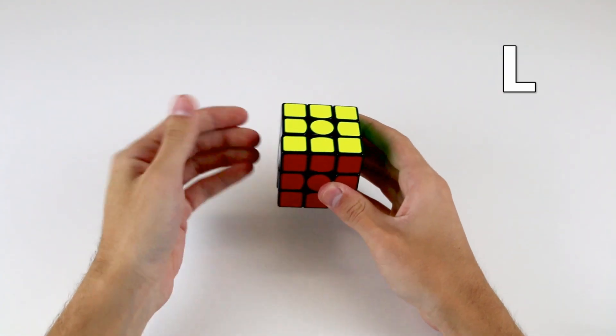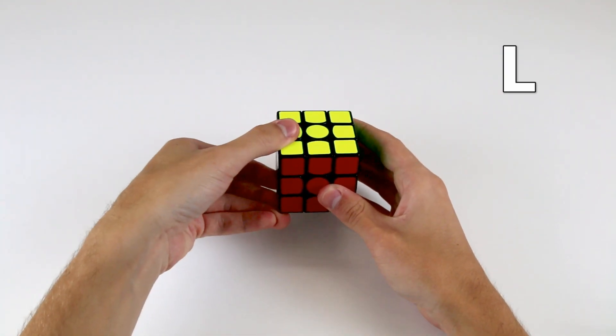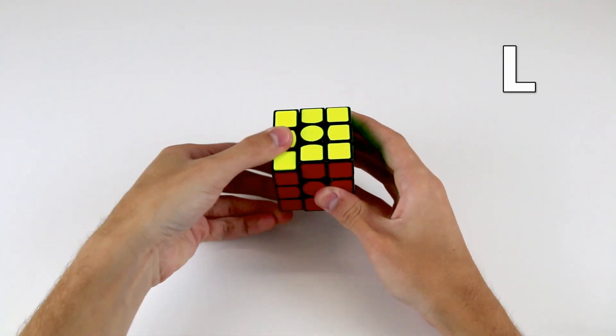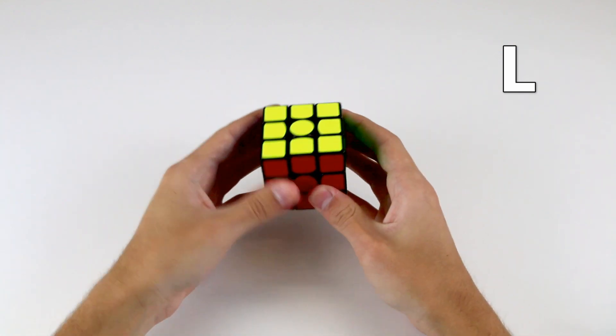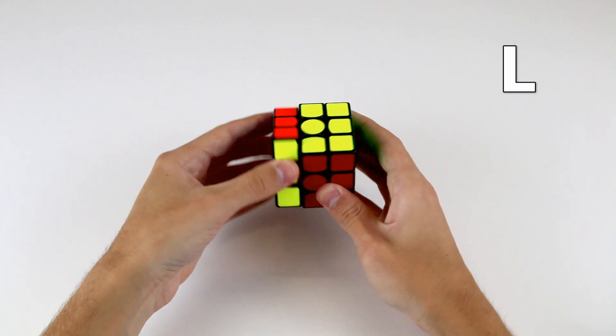Whereas L, which is to turn the left side 90 degrees clockwise, comes down like that. So if we look at the left side, we're rotating it clockwise. And so the L turn comes towards you,